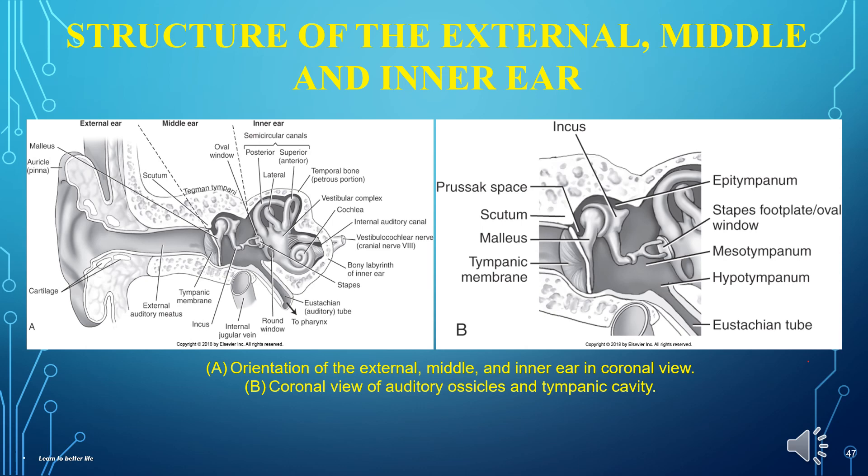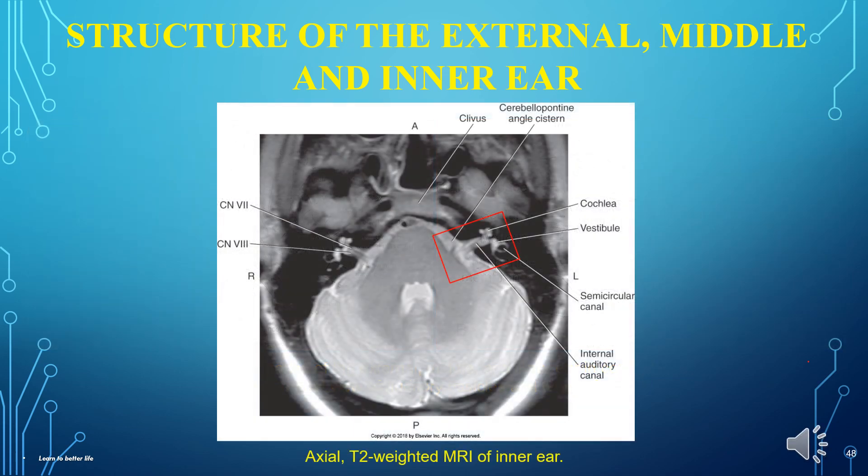This is the axial CT of the temporal bone with foramen lacerum, jugular foramen, and carotid canal. These two images portray the details of the external, middle, and inner ear. A is the orientation of the external, middle, and inner ear in coronal view. B is the coronal view of auditory ossicles and tympanic cavity. Also shown is the axial T2-weighted MRI of the inner ear. Please note the sagittal view of the IAC — because the IAC is tilted, when you scan you have to tilt the box or focus to obtain the true sagittal view of the IAC.